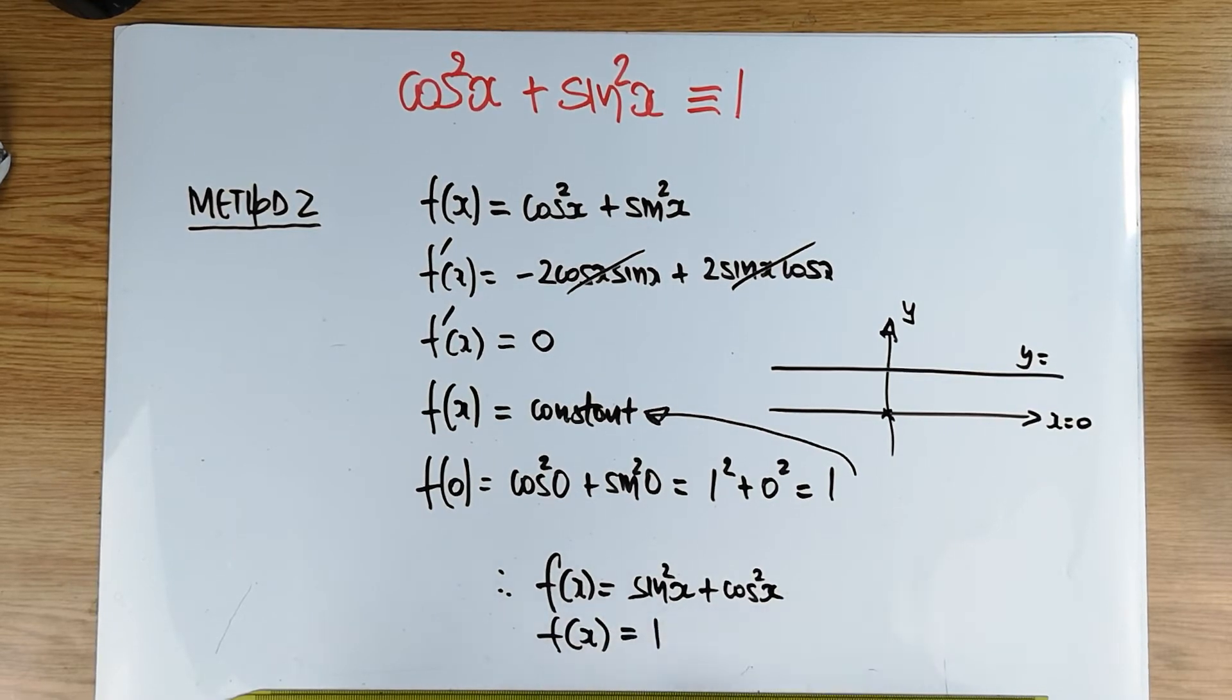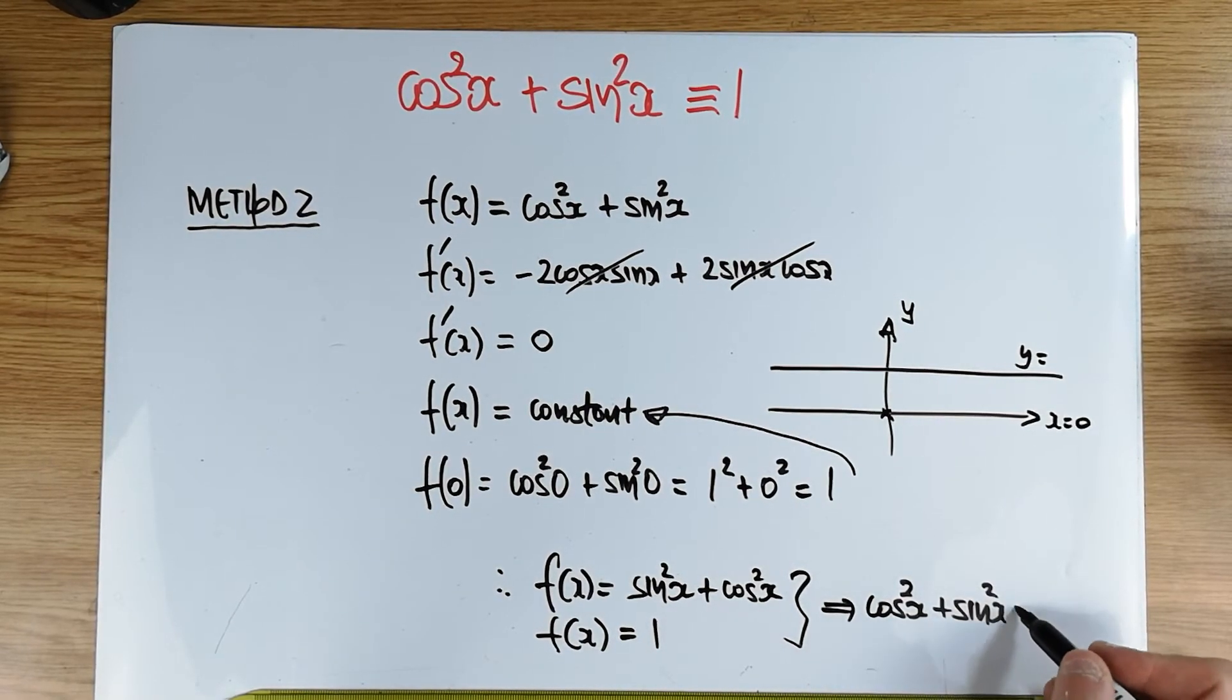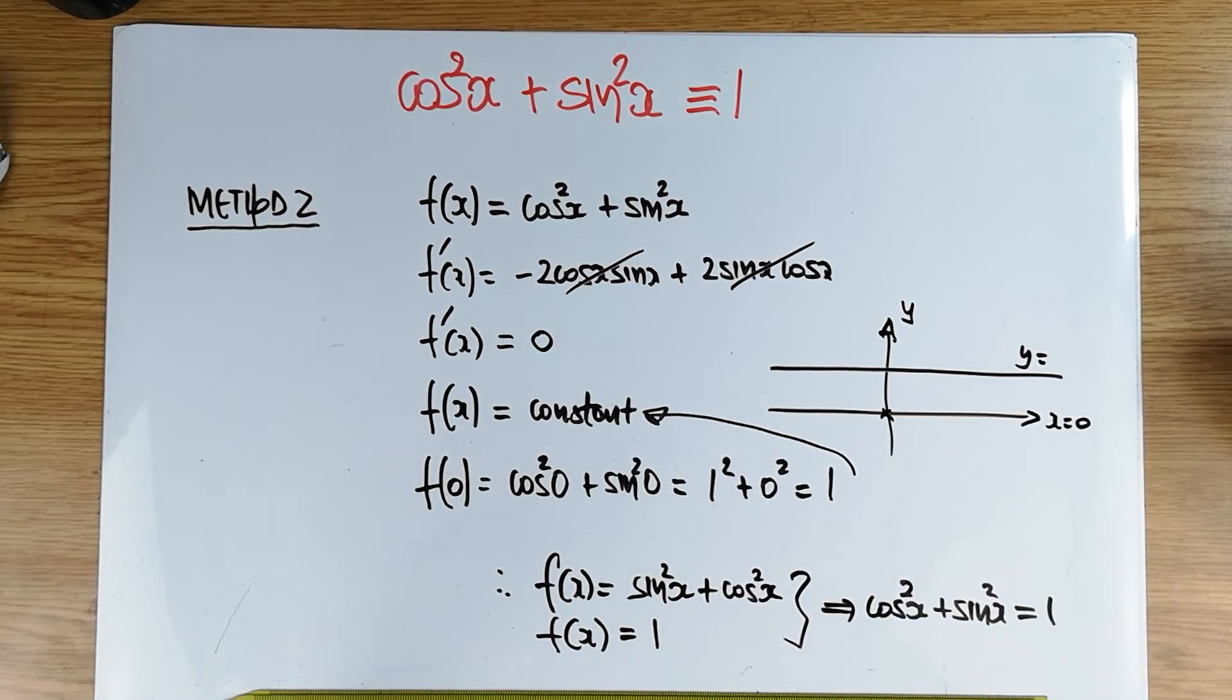And these two results now yield the desired identity. Cos squared x plus sine squared x is equal to one. Is there another way we can perhaps prove this result in general? Because, of course, this result now works for any x.